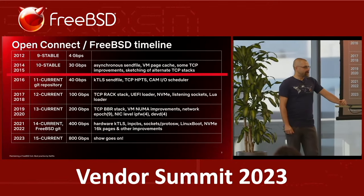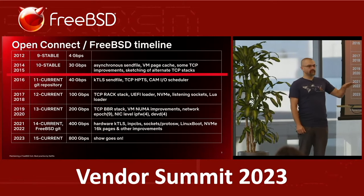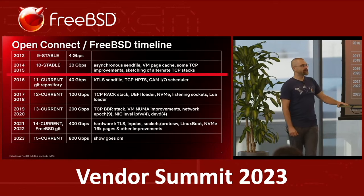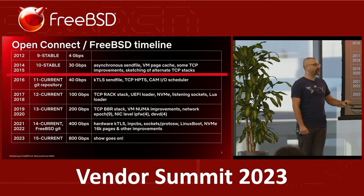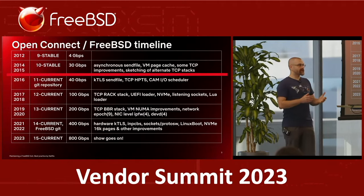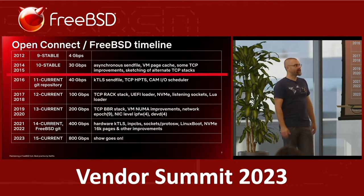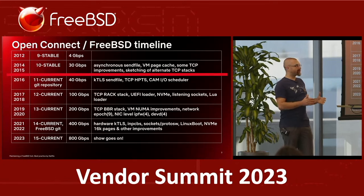And here I have a red line. What does this red line mean? It means that at this point, we consciously realized that we are maintaining a FreeBSD fork. Because before that, it was just a natural process — okay, let's patch here, let's improve here. But at that point, we realized we are going to maintain a FreeBSD fork.